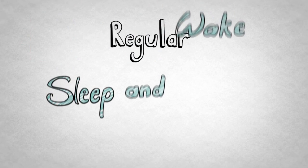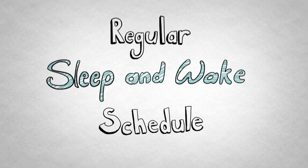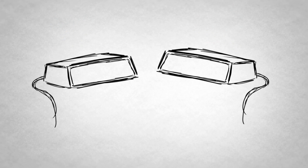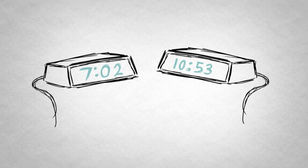Step two, maintain a regular sleep and wake schedule. Now, you don't have to wake up at exactly 7:02 and then go to bed at 10:53 every night. That's a bit on the neurotic side. But do try to wake up and go to bed at generally the same time, six days a week.